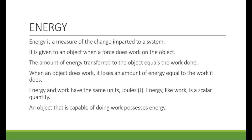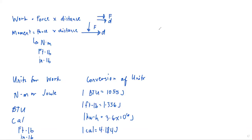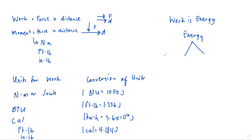Work is equal to energy. Energy has two main branches: potential energy and kinetic energy. An object that is capable of doing work technically possesses energy.